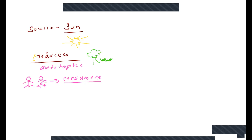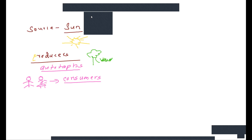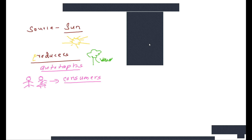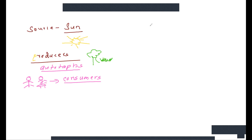This is what we studied. I'm just revising last class because I'm sure this is not easy and you might forget. Now, how is energy transferred? It's transferred through a food chain. What is the first thing in a food chain?